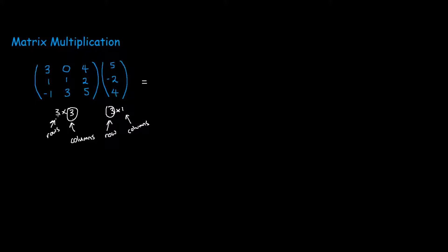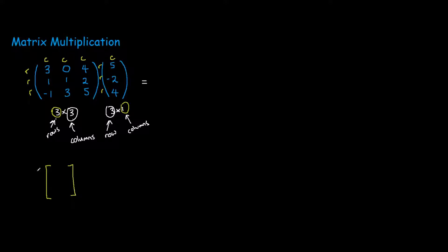You may be wondering why we wanted to know these dimensions. Well, these two numbers are important for determining the final size of the solution matrix. So we should know that we expect the solution to have 3 rows but only one column. Remember: rows are horizontal and columns are vertical. So we expect the final solution to have 3 rows but only one column.